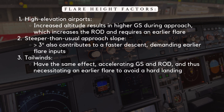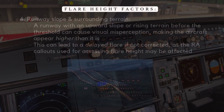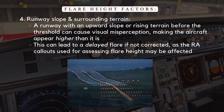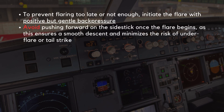Similarly, a steeper-than-usual approach slope — greater than the nominal three degrees — also contributes to a faster descent, demanding earlier flare inputs. A tailwind can have the same effect, accelerating ground speed and descent rate, necessitating an earlier flare to avoid a hard landing. A runway with an upward slope or rising terrain before the threshold can cause visual misperception, making the aircraft appear higher than it is, potentially leading to a delayed flare. To prevent mistakes like flaring too late or not enough, initiate the flare with positive but gentle back pressure. Avoid pushing forward on the side stick once the flare begins, as this ensures a smooth descent and minimizes the risk of underflare or tail strike.